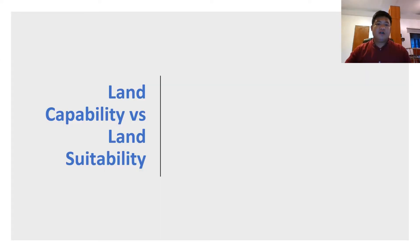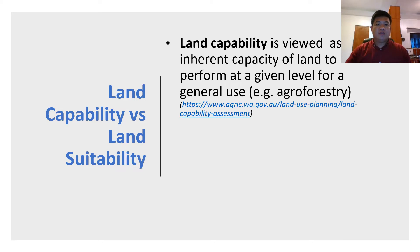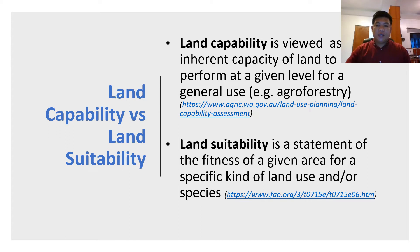Before we get into the details of the methodology, let's define some key terms related to our study: land capability and land suitability. Land capability is viewed as the inherent capacity of a land to perform at a given level for a general use, for example agroforestry development. Land suitability is a statement of the fitness of a given area for a specific kind of land use and/or species. To understand the difference, two pieces of land may both be capable for agroforestry, but the species suitable for each may differ because of the unique characteristics of each area.